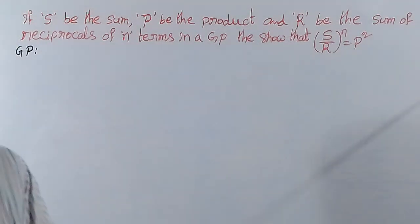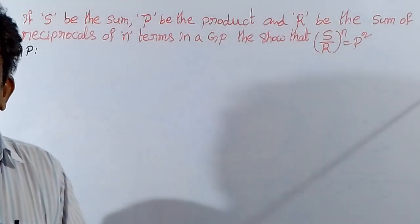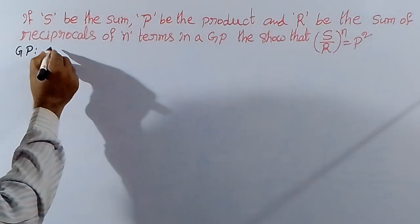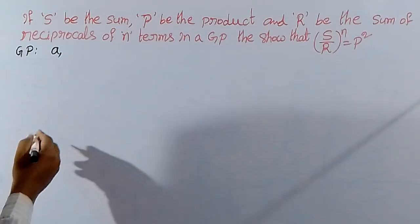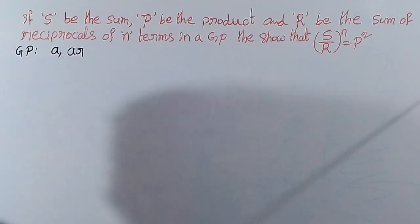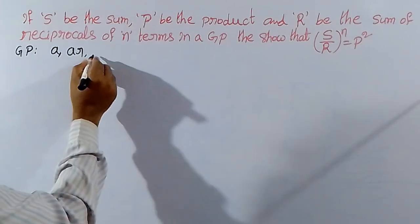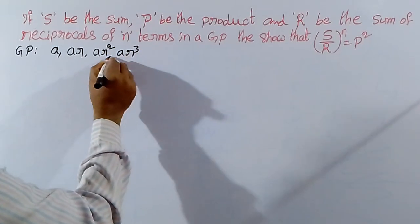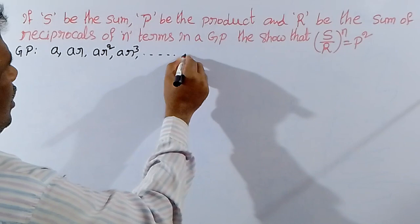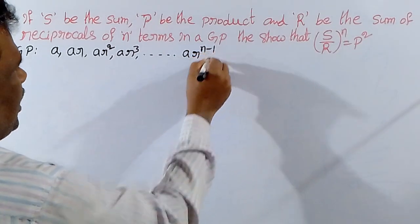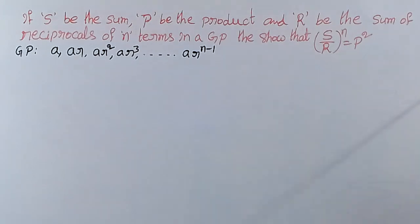In a GP, a fixed number is multiplied or divided each time. The first term is A and the common ratio is R, so the second term is AR. The general form of a GP is A, AR, AR squared, AR cubed, and so on. Up to N terms, the last term is A times R power N minus 1. That is the general term.